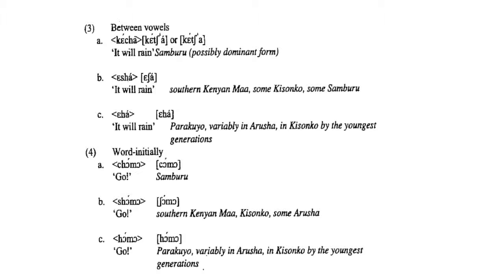This slide goes back to the ch, sh, h forms, showing that intervocalically, what we find as ch in Samburu is sh in southern Kenya Maa and Kisongo, but further south in Parakuyo, and variably in Kisongo by younger generations, the same cognate word becomes eha. For the word 'to go': chomo in Samburu, shomo in southern Kenya Maa across the border into Kisongo and Arusha, but homo in Parakuyo and somewhat in Arusha and Kisongo Maa speakers.